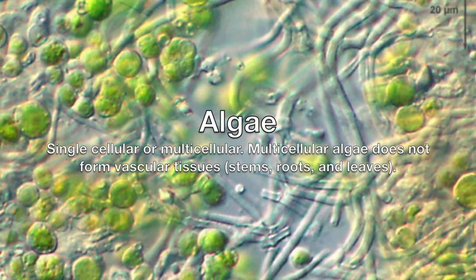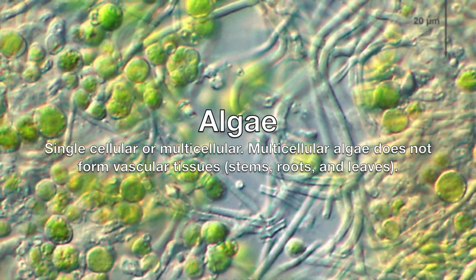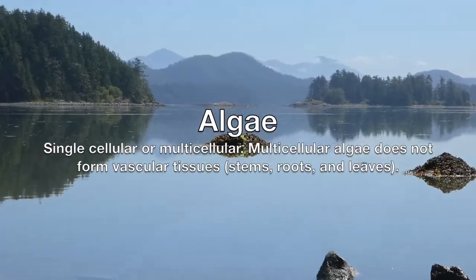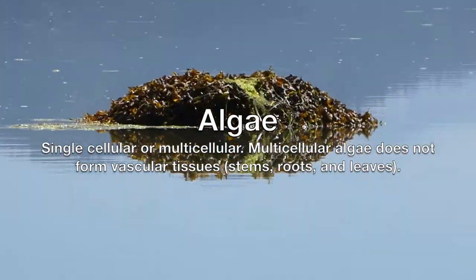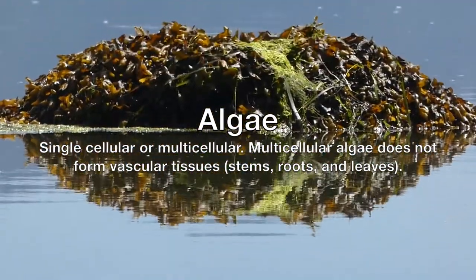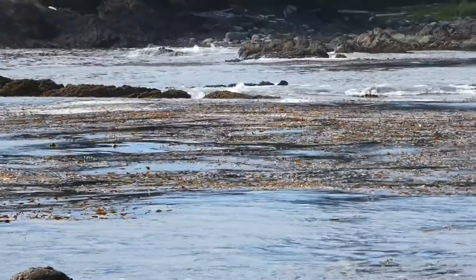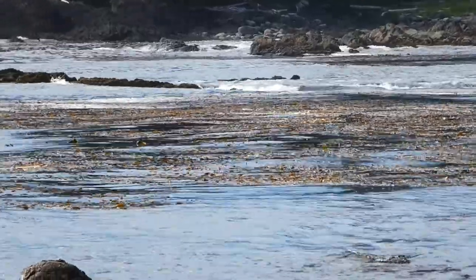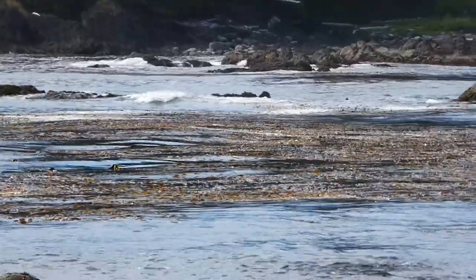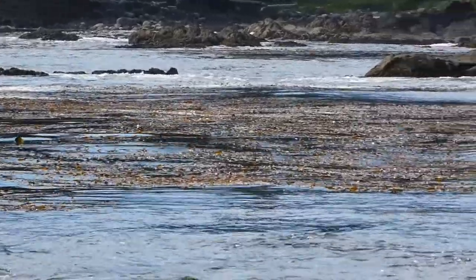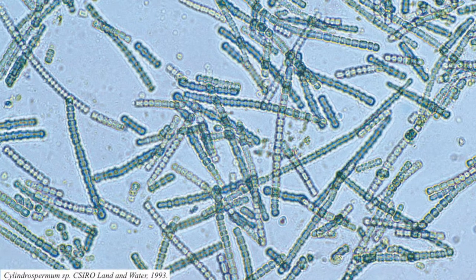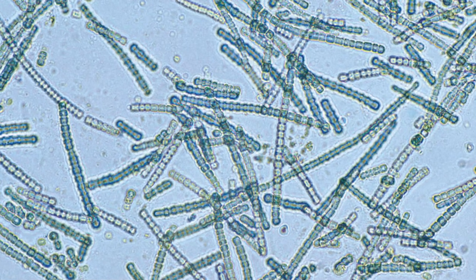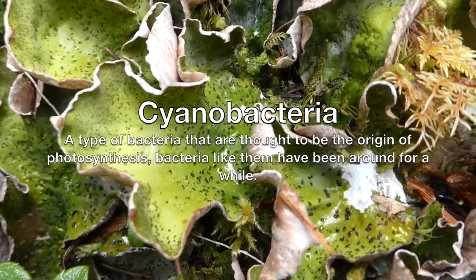What is algae? Algae can be single-cellular or multicellular. Multicellular algae, like the seaweed shown here, always lack vascular tissue like stems, roots, and leaves. Algae is photosynthetic, but it's not a plant. There are red, green, and brown algaes, but single-celled green algae is the type of algae found in lichens.